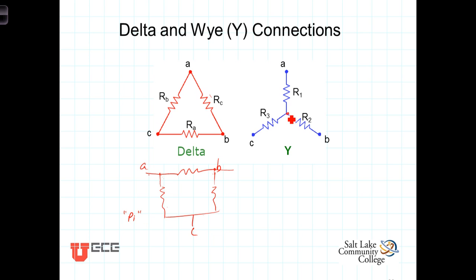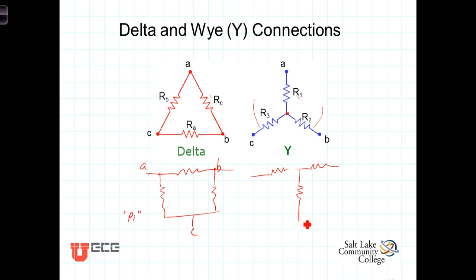Three resistors connected with one terminal of each at a common point are said to be connected in a Y structure, because in a schematic it can be drawn to look something like a Y — here it looks upside down, but turning it around gives the idea. You can also flatten out the two branches and redraw it so that it looks something like a T, and so less commonly this structure is referred to as a T connection.